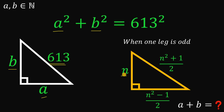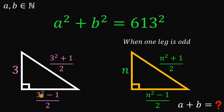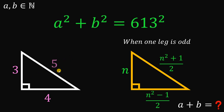When n is odd, the other leg is (n squared minus 1) over 2, and the hypotenuse is (n squared plus 1) over 2. For example, if n equals 3: the other leg is (9 minus 1) over 2, which equals 4; and the hypotenuse is (9 plus 1) over 2, which equals 5. So we know 3, 4, 5 is a Pythagorean triple.